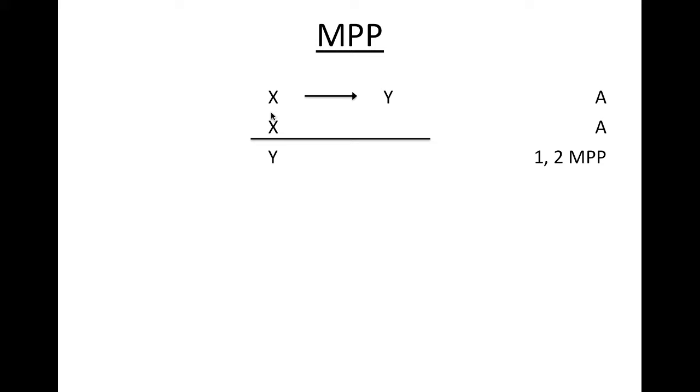Because we know that if X is true, then Y is true. And we know that we have X and X is true. Therefore, we know that Y must also be true. So this is pretty much modus ponens in its most fundamental form.